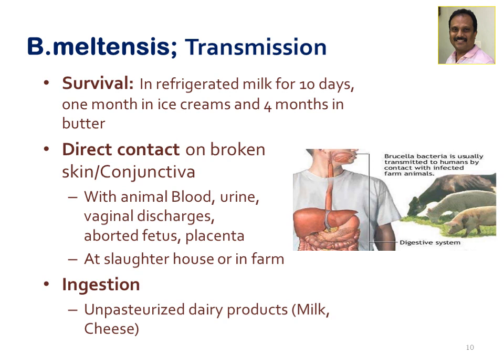The most common dangerous settings for infection are slaughterhouses and animal farms. People in direct contact with infected animals are at risk. Transmission also occurs through ingestion of unpasteurized dairy products like milk, cheese, butter, and ice cream — if unprocessed and unpasteurized, these act as a dangerous source of infection.